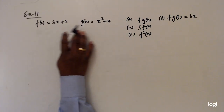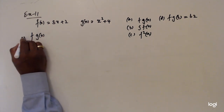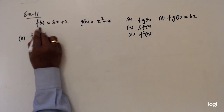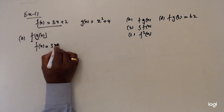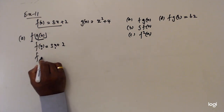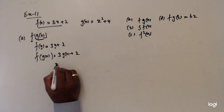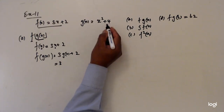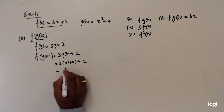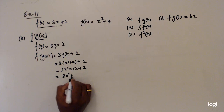This is example 11. We have f(x) and g(x), and we want to find fg(x) for part 1. g(x) is inside f, so I write f first. f(x) equals 3x plus 2. Now I replace each and every x with g(x), so f(g(x)) equals 3·g(x) plus 2. What is g(x)? g(x) equals x squared plus 4. So fg(x) equals 3(x²+4) plus 2, which simplifies to 3x² plus 12 plus 2, giving 3x² plus 14.